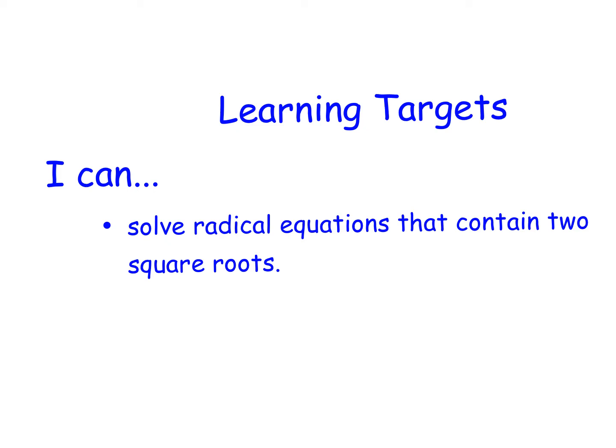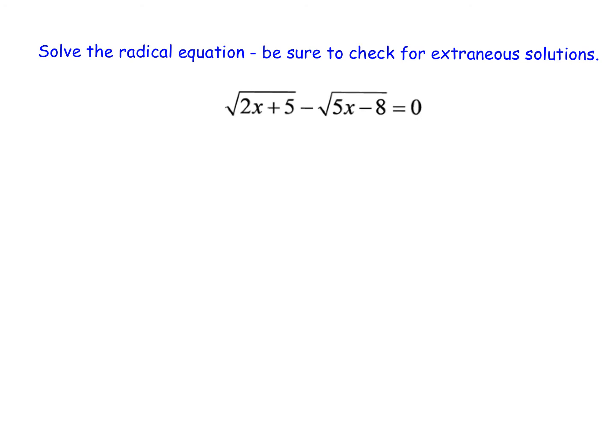In this video, we're going to discuss strategies we can use in order to solve radical equations that contain two square roots. If you look at the example on the screen, you'll notice that we have two separate square roots, and the easiest thing to do when solving a radical equation with two square roots is to get the two square roots on different sides of the equation.